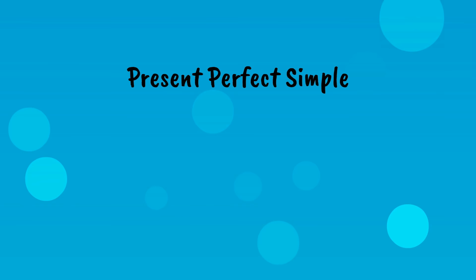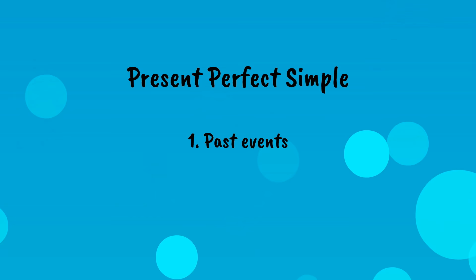Let's take a look at the present perfect simple first. The present perfect simple has three functions: we use it to talk about past events, recent past events, and unfinished states.